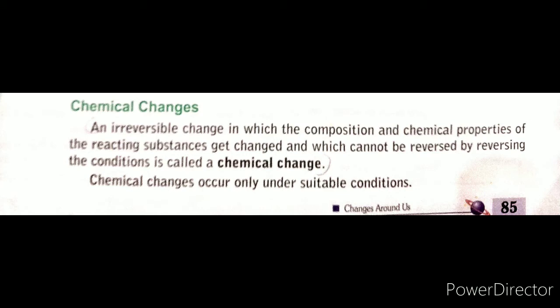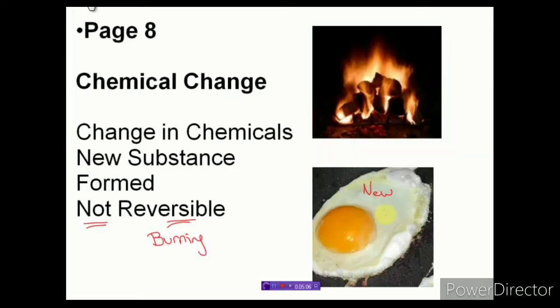Now we will learn about chemical change. A chemical change is an irreversible change in which the substance's composition and its chemical properties change. The chemical properties of the reacting substance get changed and it cannot be reversed by reversing the conditions. The new substance formed in a chemical change is completely different from the original substance.